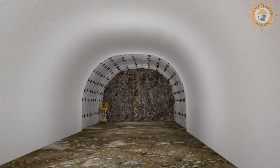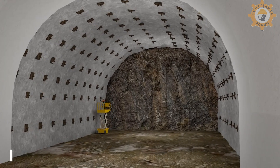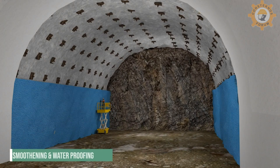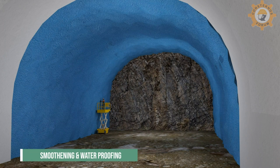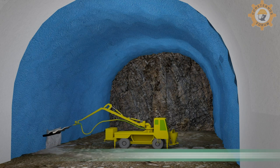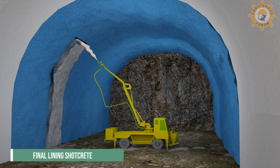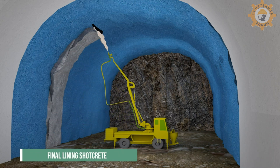For the further construction cycle of the tunnel, the process continues similarly up to rock bolting. This is followed by smoothening over the primary shotcrete, application of a waterproofing membrane, and then application of the final lining shotcrete.